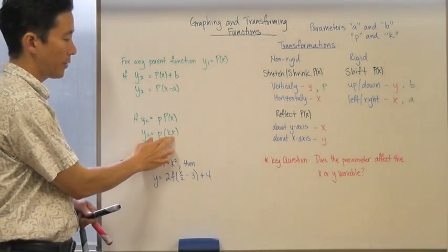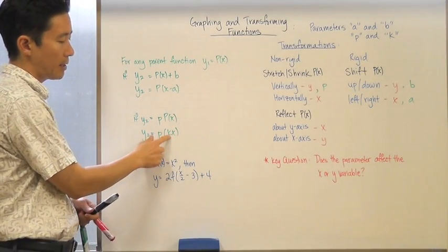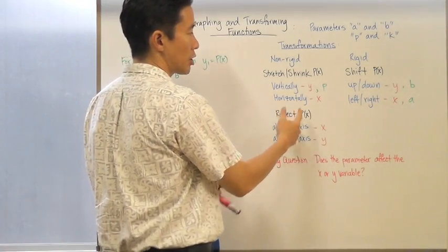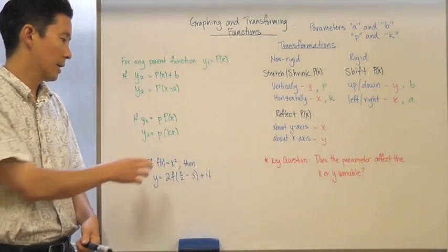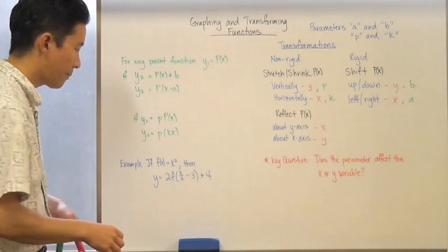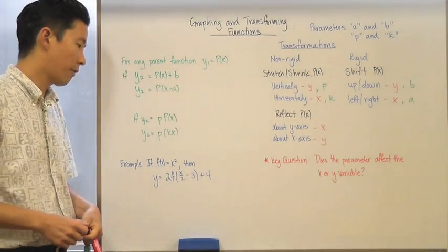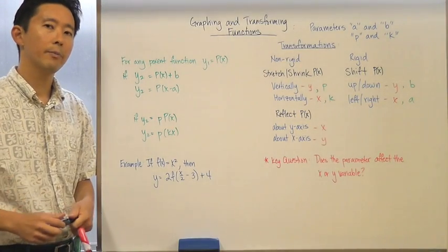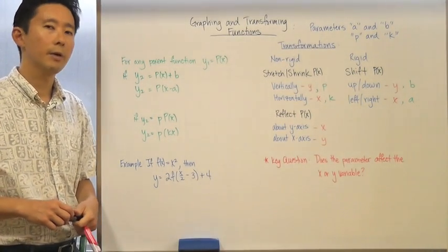In the same respect, a stretch or shrink based upon the value of k affects the x variable, so it's going to be a stretch or shrink horizontally. The parameter to stretch or shrink horizontally is the value of k. Now, let's take a quick example. If our parent function is f(x) = x², and we have y = 2·f(x/2 − 3) + 4, hopefully everybody can identify what's happening transformation by transformation.